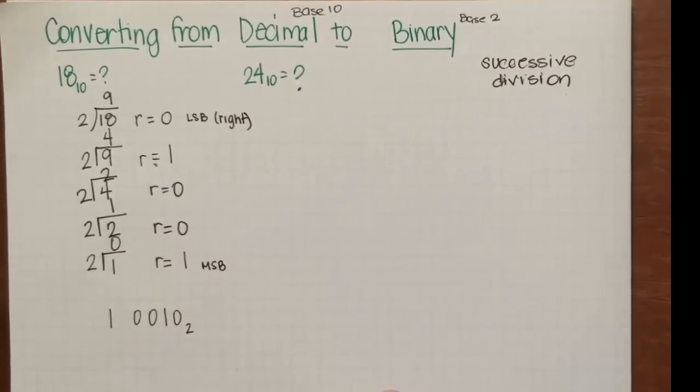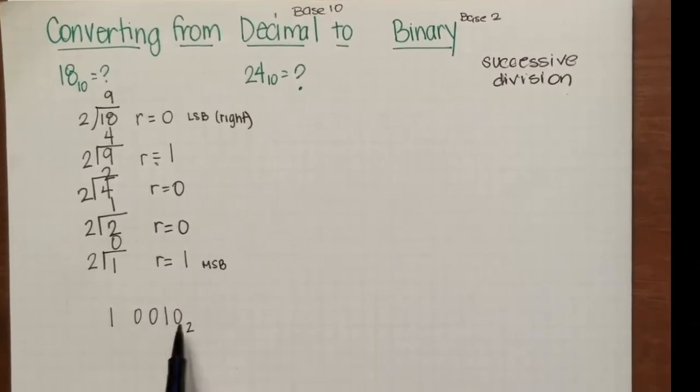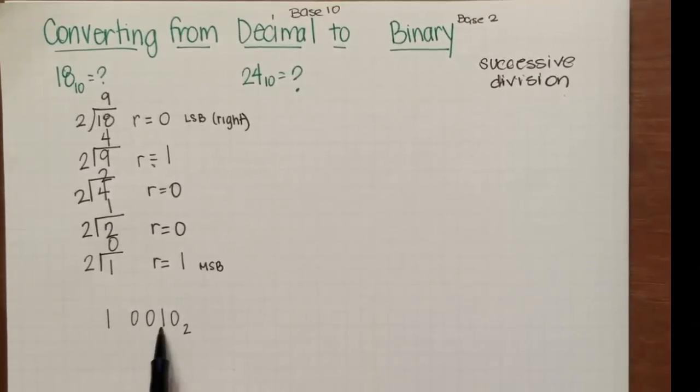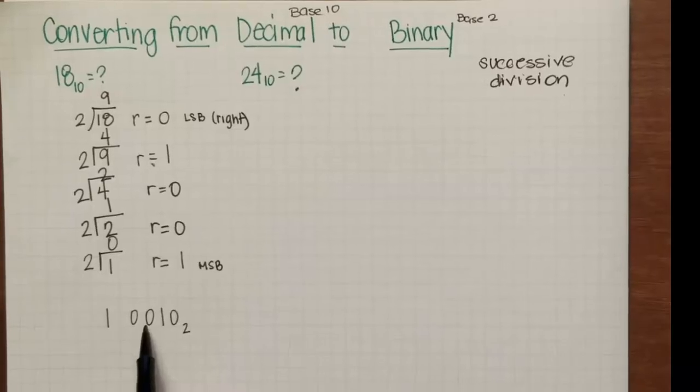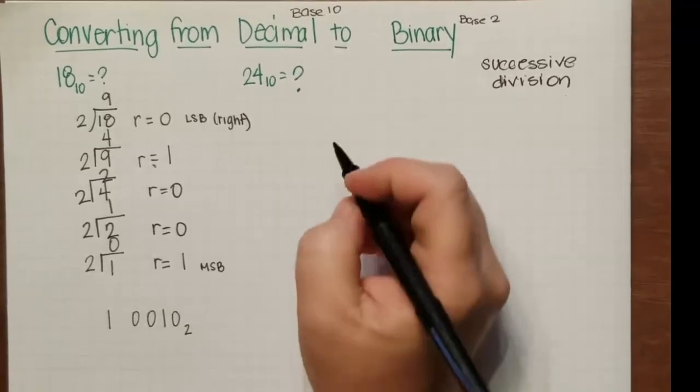Now a quick way to check that would be: does this number make 18? This would be 1, this would be 2, 4, 8, 16. 16 plus 2 would be 18, so that's right.